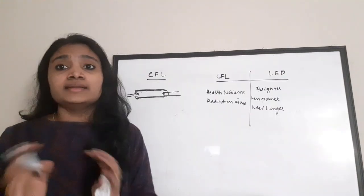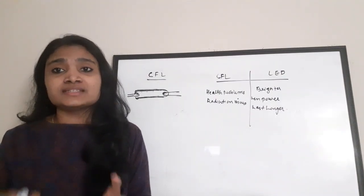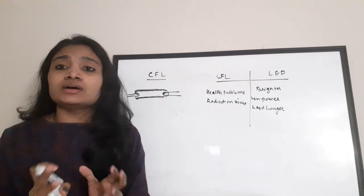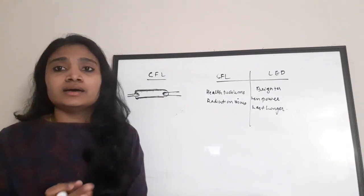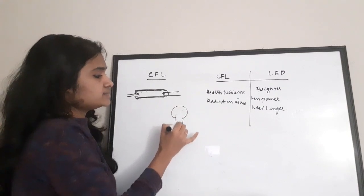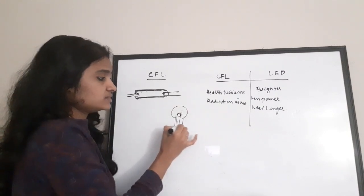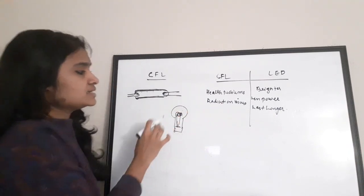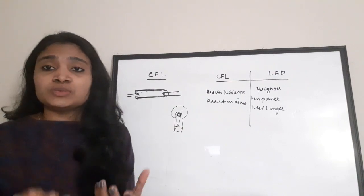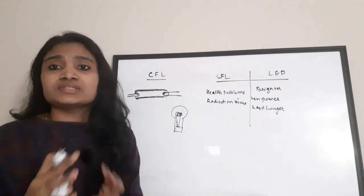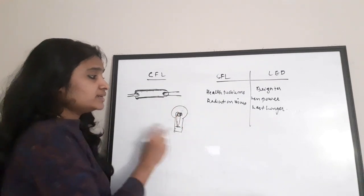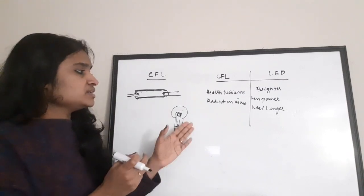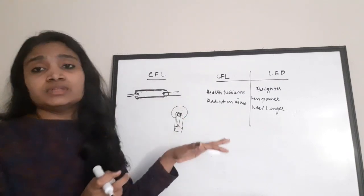Next, let us discuss CFL and compare it with LEDs. Earlier we used filament bulbs, which have a filament — mainly tungsten — inside. When current passes through the tungsten filament, it heats up and emits light. That was the older technology. Nowadays we moved on to CFL, and then to LED.